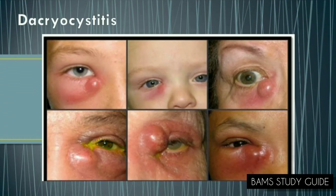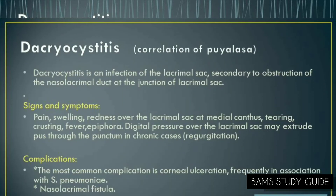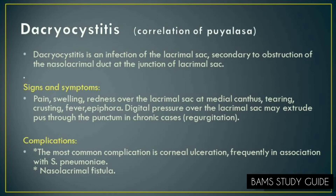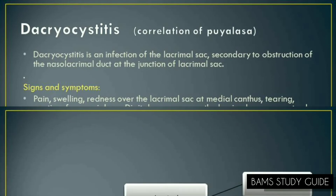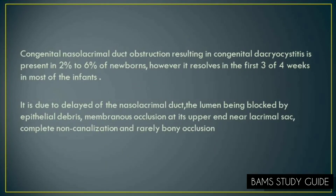Pooyalasa can be correlated with Dacryocystitis — the inflammation of the lacrimal sac. It usually occurs in two forms: congenital and adult. Congenital may be present in 2–6% of newborns and will resolve easily. Epiphora, that is lacrimation, usually develops after 7 days of birth, followed by copious mucopurulent discharge. Applying pressure over the lacrimal sac area causes regurgitation of this discharge from the lower punctum. Swelling may also appear, and if untreated it may lead to recurrent conjunctivitis, then acute or chronic Dacryocystitis, lacrimal abscess and fistulae formation.